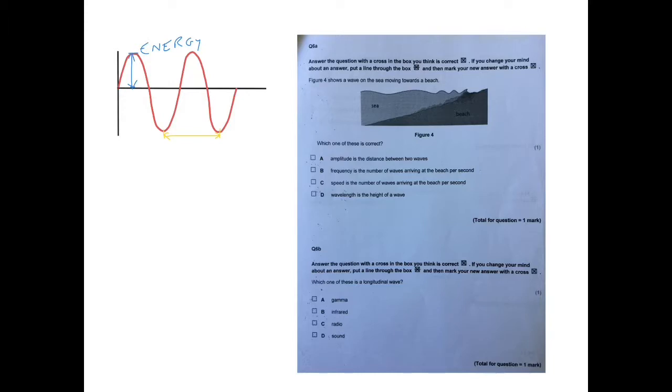So here we have basically one wavelength here, and then another wavelength here. So the frequency shown on this graph would be 2 hertz. And 1 hertz is basically a wave per second. So 2 hertz means 2 waves are arriving every second.